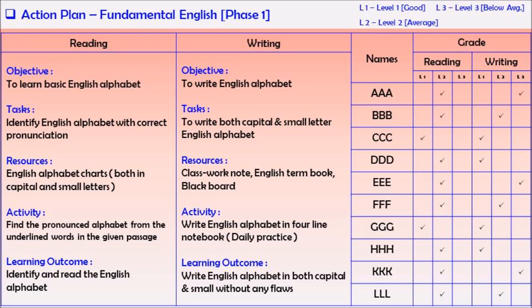In English there are two columns: reading and writing. Here are five side headings: objective, tasks, resources, activity, and learning outcome.